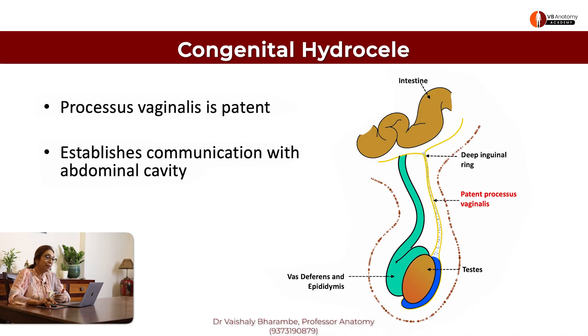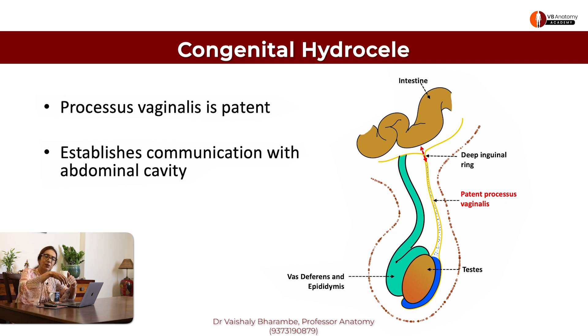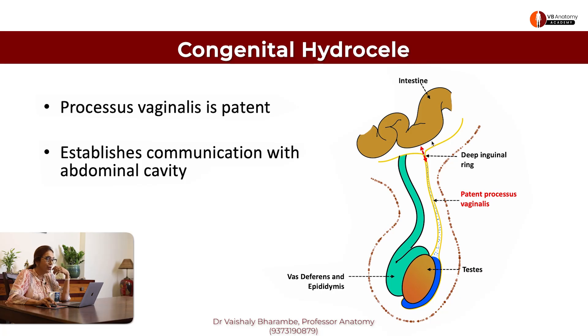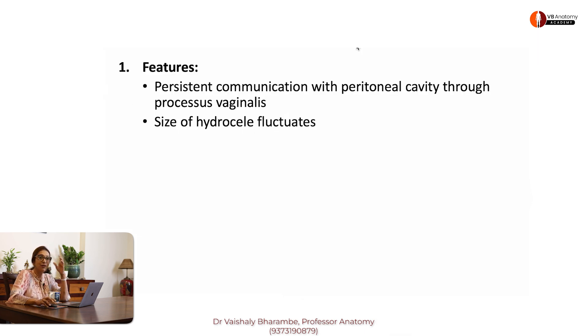So what is congenital hydrocele? Take a look. This is the patent processus vaginalis communicating with the abdominal cavity. Fluid from the abdominal cavity will come inside; fluid from the processus will go back in. Fluid can come in, fluid can go out — which means the size of this hydrocele is going to fluctuate.